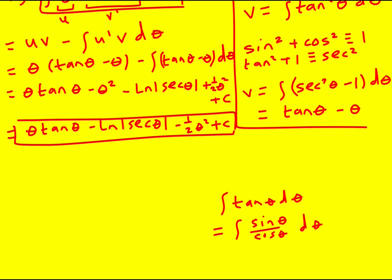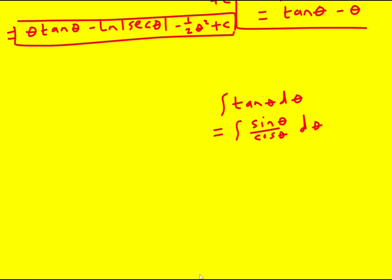And it's nearly in the form f dash x over f of x. But when you differentiate cos x you actually get minus sine. So I'm just going to stick a minus there and then a minus outside. Because then it becomes minus ln of f of x or in this case cos theta. I've only just sort of briefly talked about it.